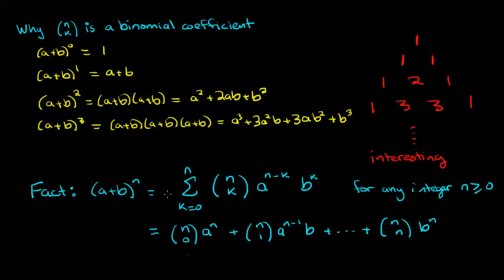If you've heard me talking about n choose k before, you've heard me refer to it as a binomial coefficient, especially when I talk about Pascal's triangle. The reason why it's called a binomial coefficient is because they occur here as the coefficients in this expansion of this binomial expression.